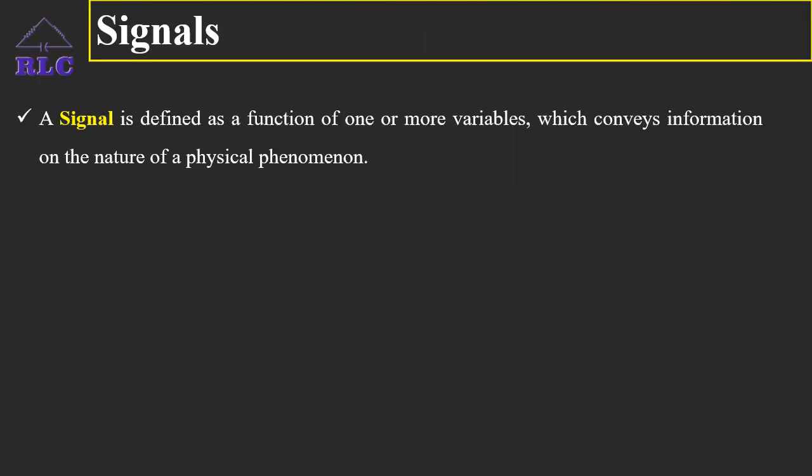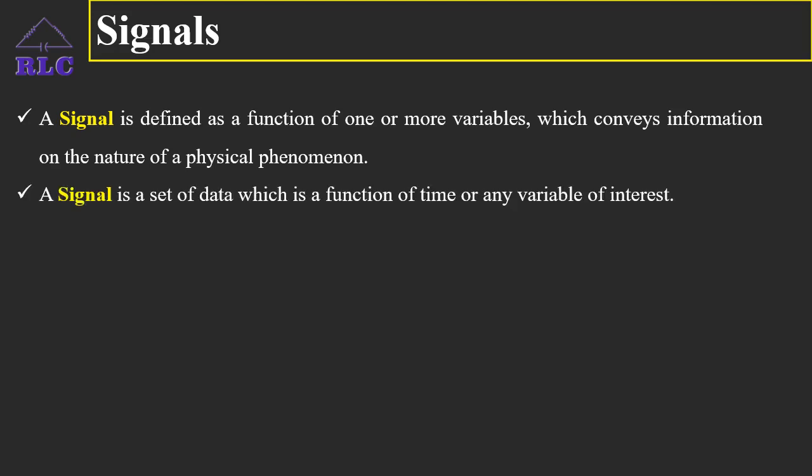Signals. A signal is defined as a function of one or more variables which conveys information on the nature of a physical phenomenon. A signal can also be defined as a set of data which is a function of time or any variable of interest.